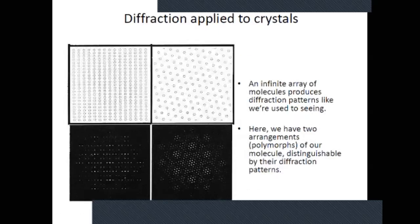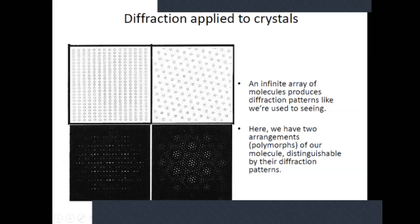Looking at crystals, here we have two different polymorphs of benzene — two different crystalline forms of the same molecule. The two polymorphs give two completely different diffraction images, because different crystal structures diffract differently. From the spacing of the diffracted spots we can calculate d-spacing, 2-theta, and related parameters.